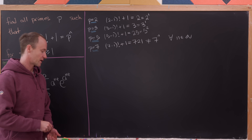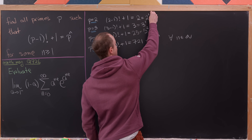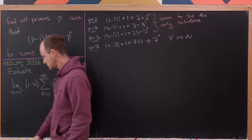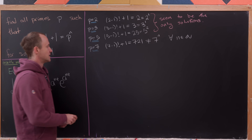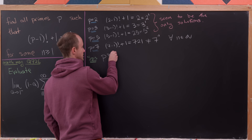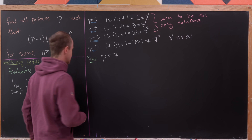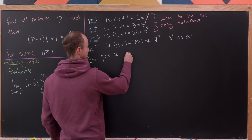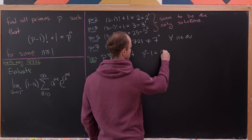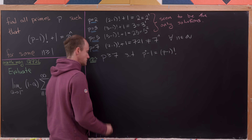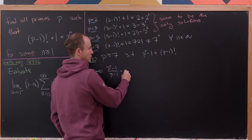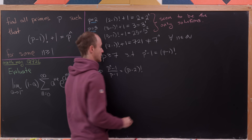You can test more cases and see that these first three solutions seem to be the only solutions, so let's prove that. We start by supposing we have a prime p ≥ 7 and rewriting the equation as p^n - 1 = (p-1)!, which gives us (p^n - 1)/(p - 1) = (p-2)!.